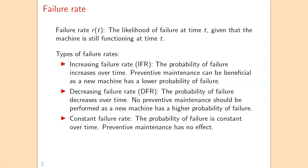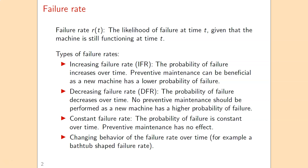Failures can also occur completely randomly over time. Then we talk about a constant failure rate, and then preventive maintenance also has no effect. The pattern could also be more complicated — for instance, the failure rate could first go down and then go up again. If that's the case, then we talk about the bathtub-shaped failure rate.